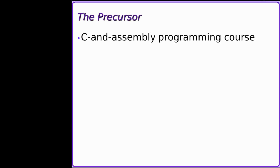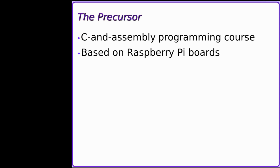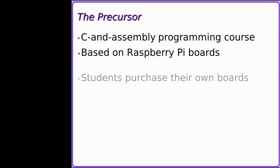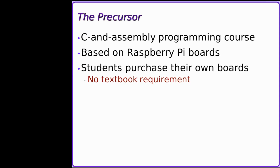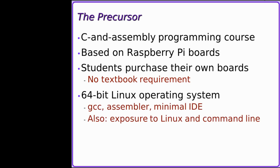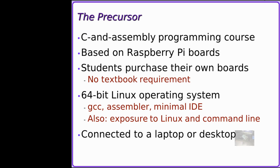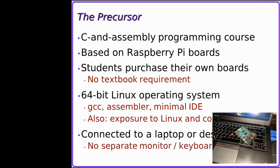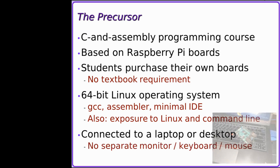The presumed prerequisite for this course is another computer science requirement, a second-year course in C and 64-bit assembly programming. I teach this course using Raspberry Pi computers that the students buy instead of textbooks. The students also get exposure to the Linux operating system, in contrast to the Windows or Mac OS system that most of them use already. I provide a 64-bit operating system image that is set up to operate headless, allowing students to plug the Raspberry Pi into their own laptop or desktop and use that system as a console, instead of needing a separate monitor, keyboard, and mouse for the Raspberry Pi.